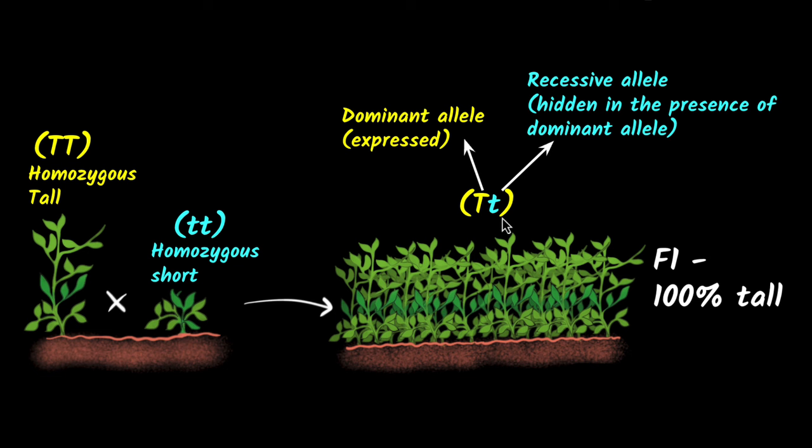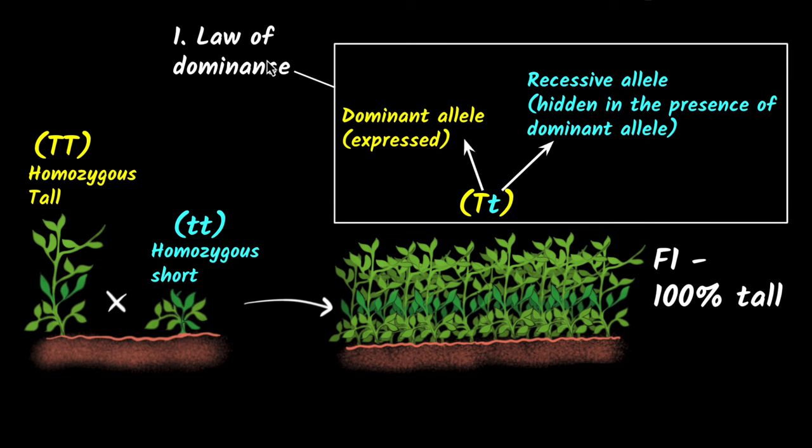So whenever you have two different alleles, one will be dominant, the other will be recessive. In the pea plants, it turns out that the tall allele is dominant and the short allele is recessive. This is what we call the law of dominance. One allele will be dominant, another one will be recessive.